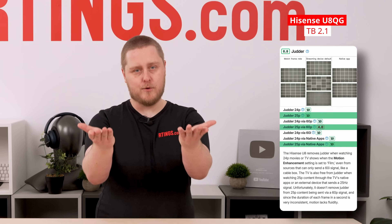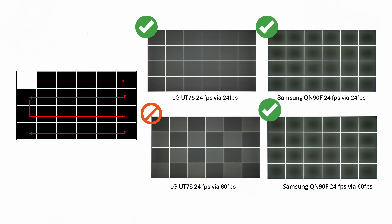To conduct our judder tests, we play a 24 or 25fps video that cycles a white square through 24 or 25 slots respectively over the course of one second, while capturing a photo of the screen using a one-second exposure. If all boxes are of a uniform shade, each square was displayed for the same amount of time, indicating a judder-free and uniform frame rate. If the pattern is uneven with brighter or darker shaded squares, judder is present. From our initial batch of 10 TVs, only the LG UT75 failed to display 24fps from a 60Hz signal, with the checkerboard pattern revealing the 3-to-2 pull-down process.